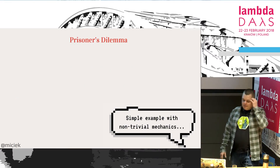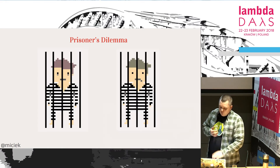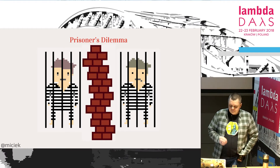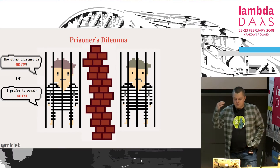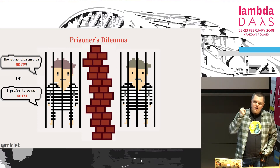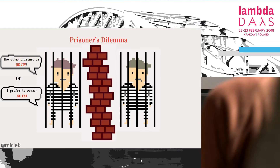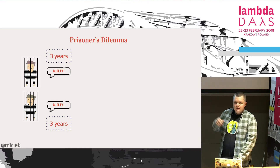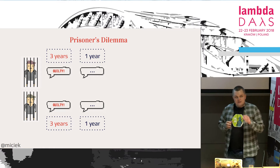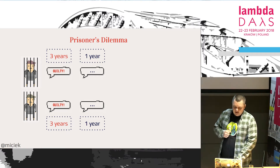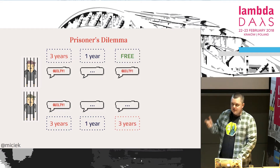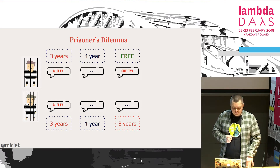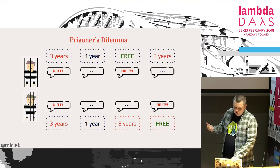The problem is Prisoner's Dilemma — a very simple problem. We have two prisoners separated from each other who don't know about one another. They are interrogated in isolation and can answer in two ways: either they can be silent, or say that the other one is guilty. In one game there are four possible outcomes: if both say the other is guilty, they each get three years; if both are silent, they get one year; and if one says guilty while the other stays silent, the one who said guilty walks free and the other gets three years.